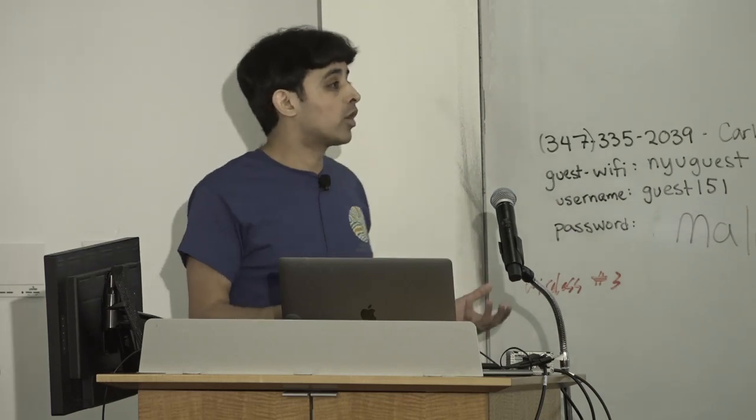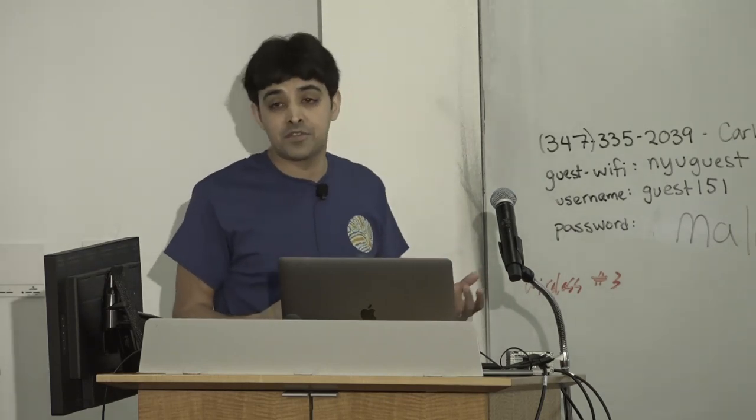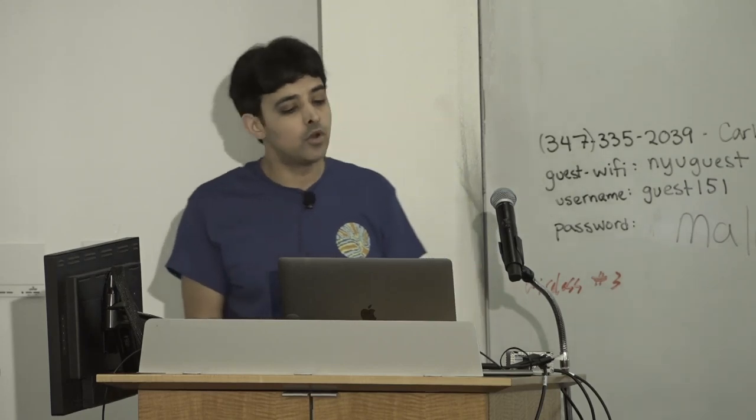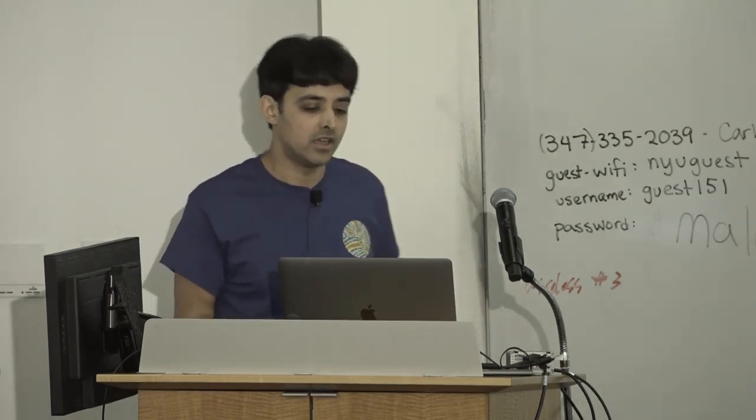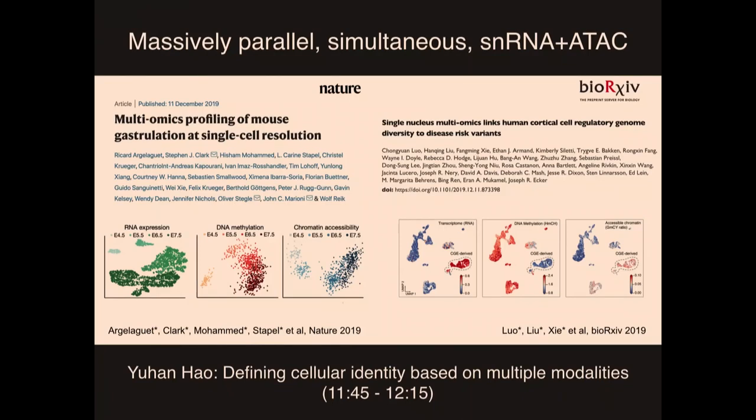As we can measure more and more things, it creates the challenge of figuring out how to analyze this data. We don't just want to cluster on a single modality — we want to leverage all the information simultaneously. Yuhan Hao is working on some of the first strategies, including our own, to define cellular identity not just based on RNA or ATAC but based on multiple modalities simultaneously, which is really an exciting area for computational methods development.